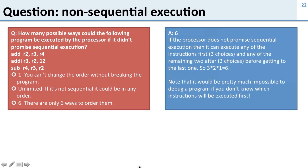Well the answer here is six. If we don't promise sequential execution then we can do any one of these first and any of the remaining two second. So that's three times two or six.